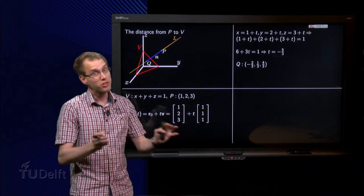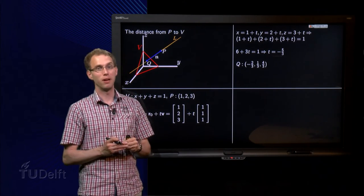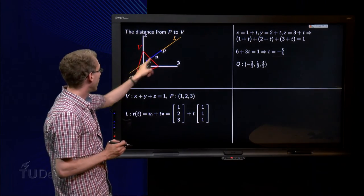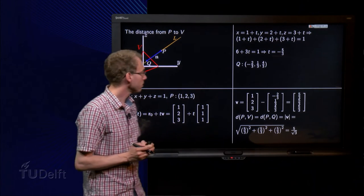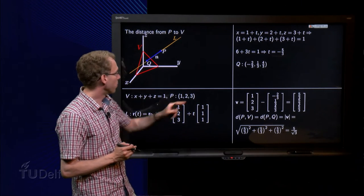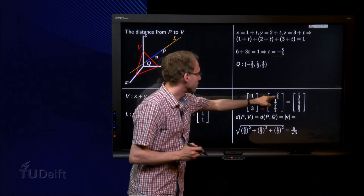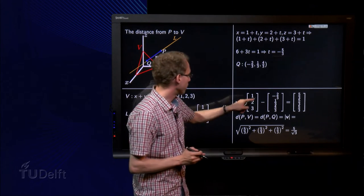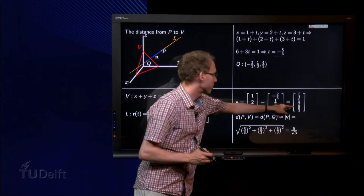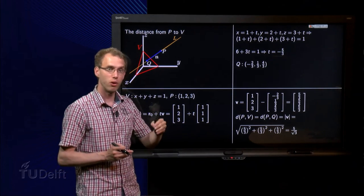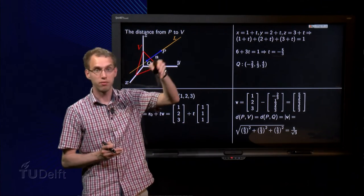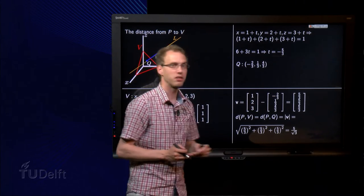So almost there, because now we have found our point Q. And now we can compute the vector going from Q to P, or from P to Q, which gives us our vector (5 over 3, 5 over 3, 5 over 3). So going from Q to P, you have to go along 5 over 3, 5 over 3, and 5 over 3, that's the vector V.